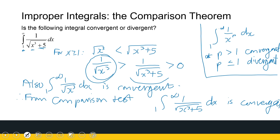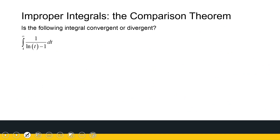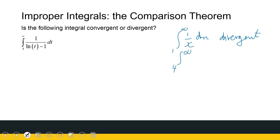Let's look at another one: the integral from 4 to infinity of 1 over ln(t) minus 1. This one's not so obvious what we're comparing it to. I'm going to compare it to 1 over x. The integral from 1 to infinity of 1 over x dx is divergent, and therefore the integral from 4 to infinity of 1 over x dx is also divergent — because it's not the starting point of 1 versus 4 that causes the problem, it's that we're going all the way to infinity.